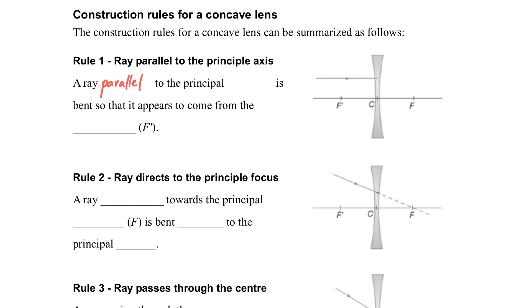So here are three rules. Rule number one, when the light ray parallel to the principal axis, it will bend from the focus. So you can consider the figure, when the light go parallel, then the light will bend from the focus.